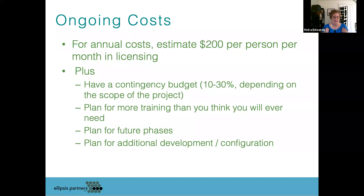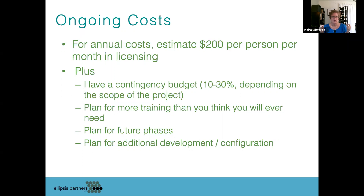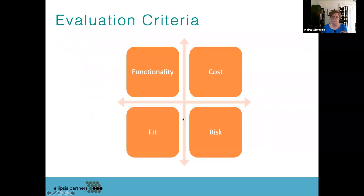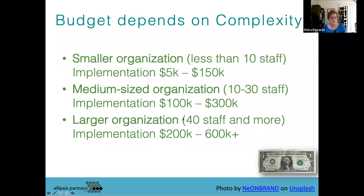You have to plan for what you're going to spend every year. Many vendor partners charge license costs in the first year even though you may not be using all features yet — this is one way they cover the big effort they put in during year one. As a rough rule of thumb, I budget $200 per person per month in licensing fees. It's not exact, but it gives you a sense of what you can expect.